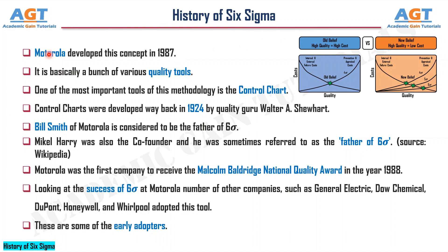History of Six Sigma. Motorola developed this concept in 1987. It is basically a bunch of various quality tools. One of the most important tools of this methodology is the control chart. Control charts were developed way back in 1924 by quality guru Walter A. Shewhart. Bill Smith of Motorola is considered to be the father of Six Sigma. Mikel Harry was also the co-founder, and he was sometimes referred to as the father of Six Sigma.